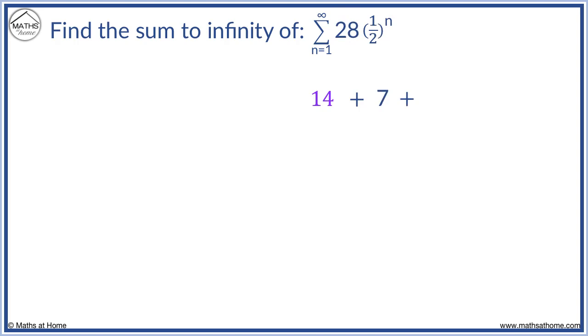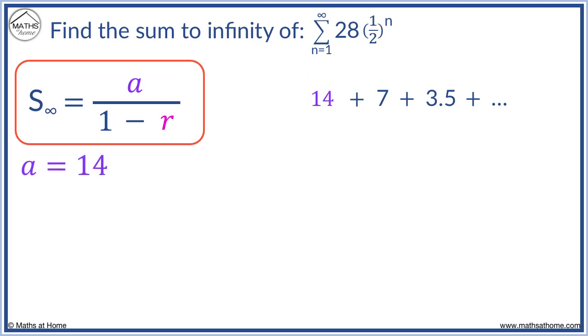Now we simply find the values for a and r. a equals 14. 7 divided by 14 equals 1 half.